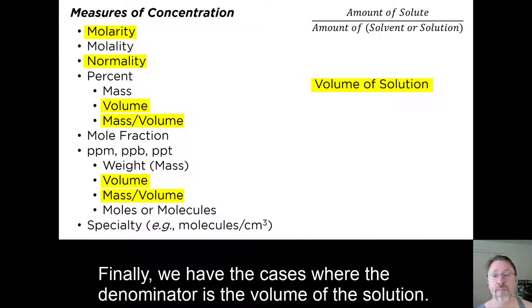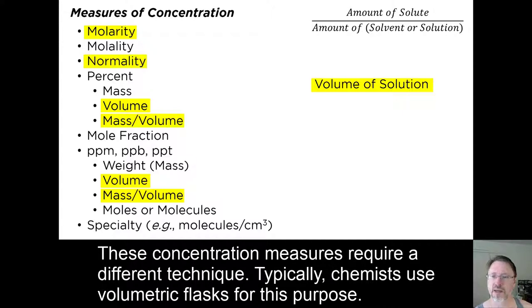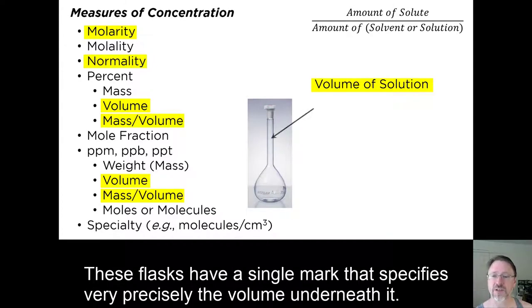Finally, we have the cases where the denominator is the volume of the solution. These concentration measures require a different technique. Typically, chemists use volumetric flasks for this purpose. These flasks have a single mark that specifies very precisely the volume underneath it.